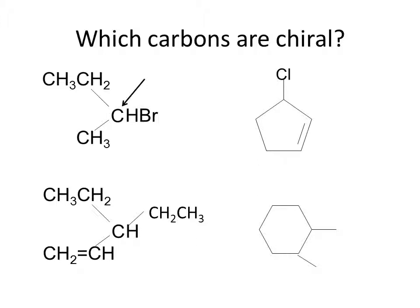On the first molecule, you can see the carbon that has an arrow pointing to it has a hydrogen on it, a bromine on it — that's two different groups — then a methyl group and an ethyl group, two more different groups. So that carbon is chiral. All the other carbons have more than one hydrogen on them, so they must be achiral because two hydrogens are the same. On the next molecule to the right, the carbon that the chlorine is attached to has a chlorine, a hydrogen, a carbon with a double bond, and a carbon with a single bond — so that carbon is chiral.